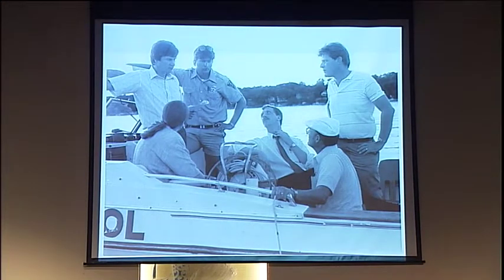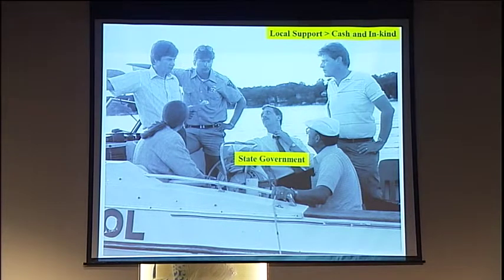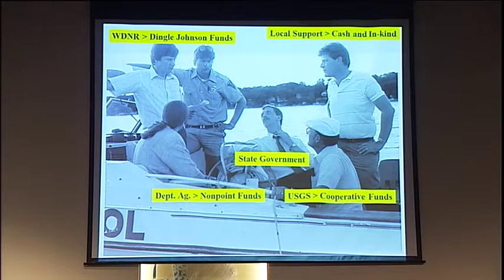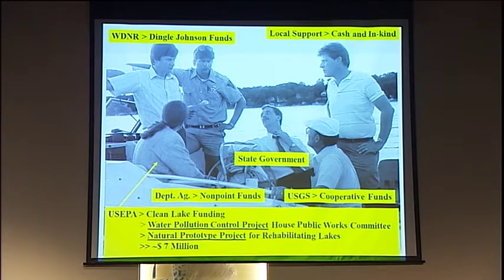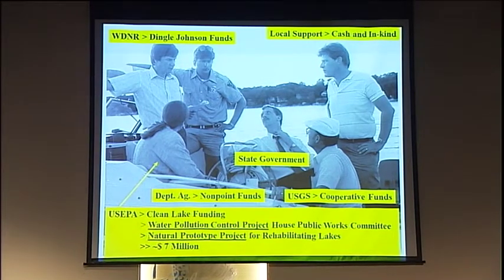In order to do that, they got all the people in the community together — a whole range of people. They got local support from people around the area who put money into this process. They had the state government involved, the Wisconsin DNR willing to put money in to rehabilitate the fishery, the USGS doing the science, the Department of Agriculture looking at reducing nonpoint sources from the watershed, and finally the US Environmental Protection Agency — which was willing to put in as much as $7 million — wanting to use this as a science tool to learn as much as possible from this lake.